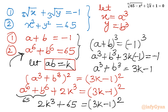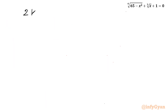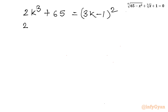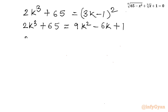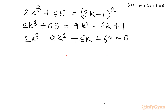Let us solve this cubic equation for K. Expanding the right-hand side: 2K³ plus 65 equals 9K² minus 6K plus 1. Taking all terms to the left-hand side: 2K³ minus 9K² plus 6K plus 64 equals 0. Now I will solve this cubic equation using the factorization method. We can split the minus 9K² term: 2K³ plus 4K² minus 13K² plus 6K plus 64 equals 0.